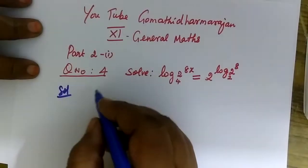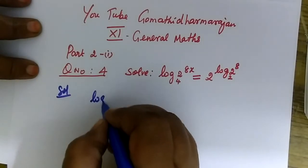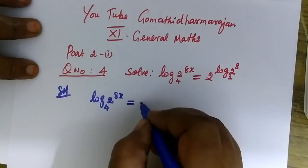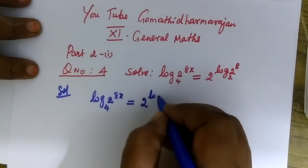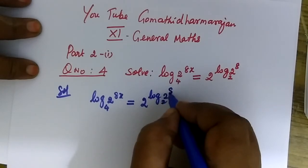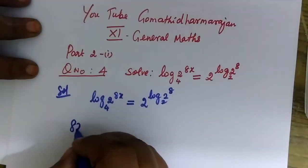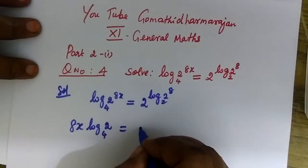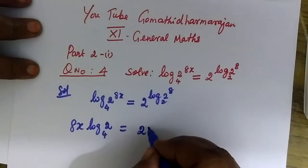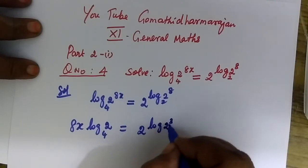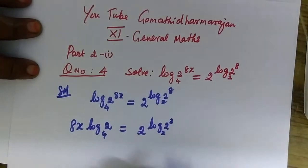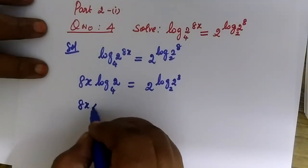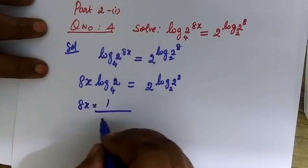The solution: on the LHS, we are writing log 2 to the base 4, which is 8x. This is equal to 2 log 2 to the base 2, power only 8. This 8x can be written as 2q, power only 8x. Then, using the change of base rule for 8x.